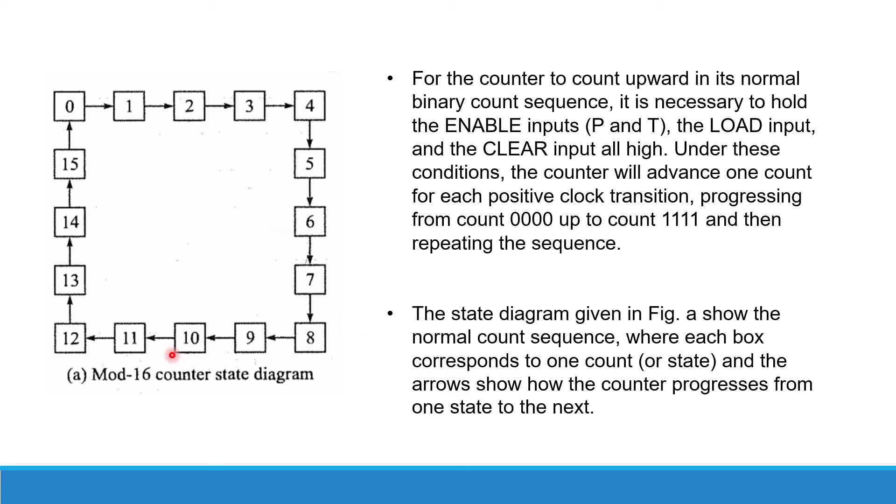The state diagram given in figure A is a normal count sequence where each block corresponds to one count and the arrows show how the counter progresses from one state to another.